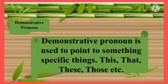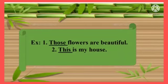Now see, demonstrative pronoun. Demonstrative pronoun is used to point to specific things. You can see: this, that, these, or those. These four are the demonstrative pronouns, used only to point out something. See the example: Those flowers are beautiful. This is my house. So 'those' is used to point out flowers, and 'this' is used to point out the house.